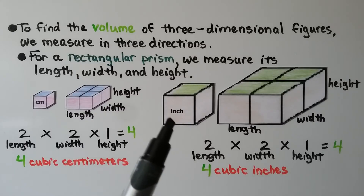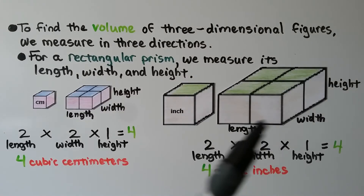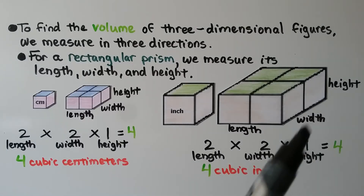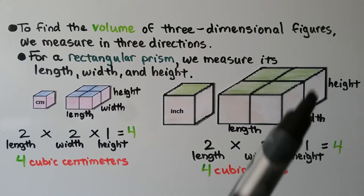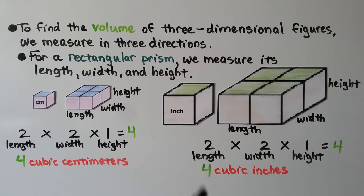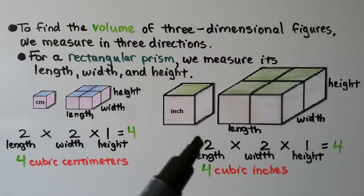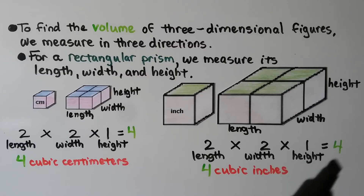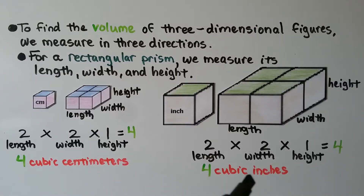Here we have a 1-inch cube. The length is 2 inches, the width is 2 inches, and the height is 1 inch. We have the same multiplication: 2 times 2 times 1 is 4. But because these are inches, we have 4 cubic inches.